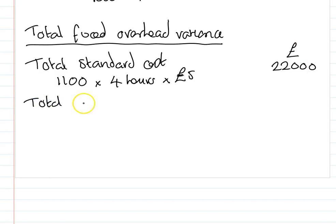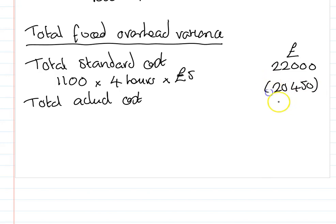My total actual cost is £20,450, and that gives me a total variance of £1,550 favorable. You can see it's favorable quite easily — my total standard cost, my expected cost, was £22,000, and my actual cost, the real money spent on fixed overheads, was £20,450. So I have a favorable variance.